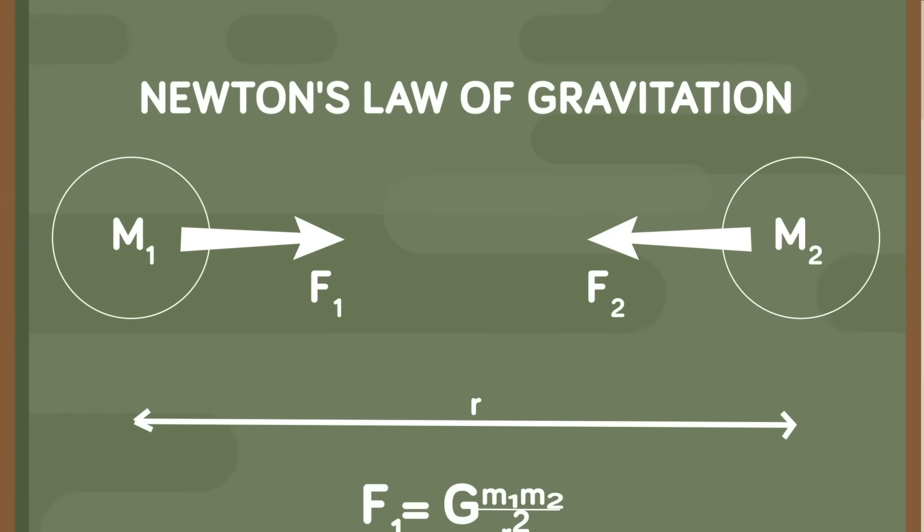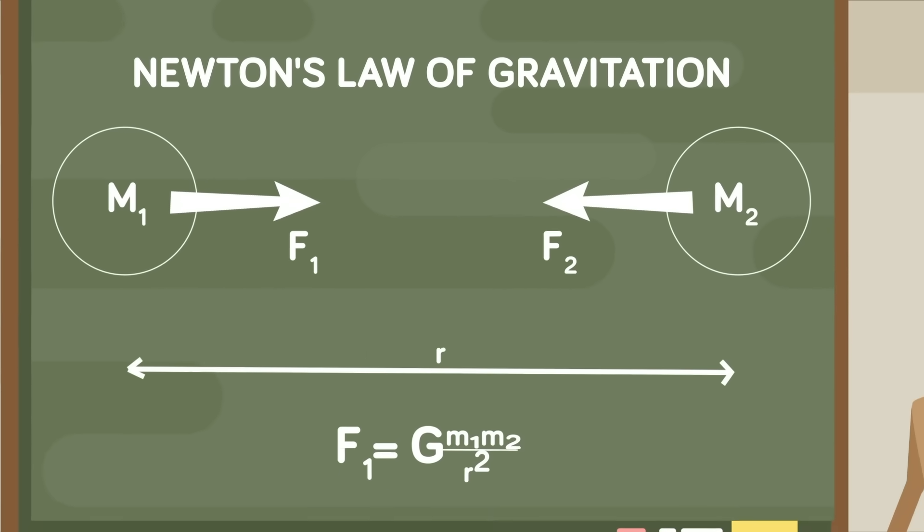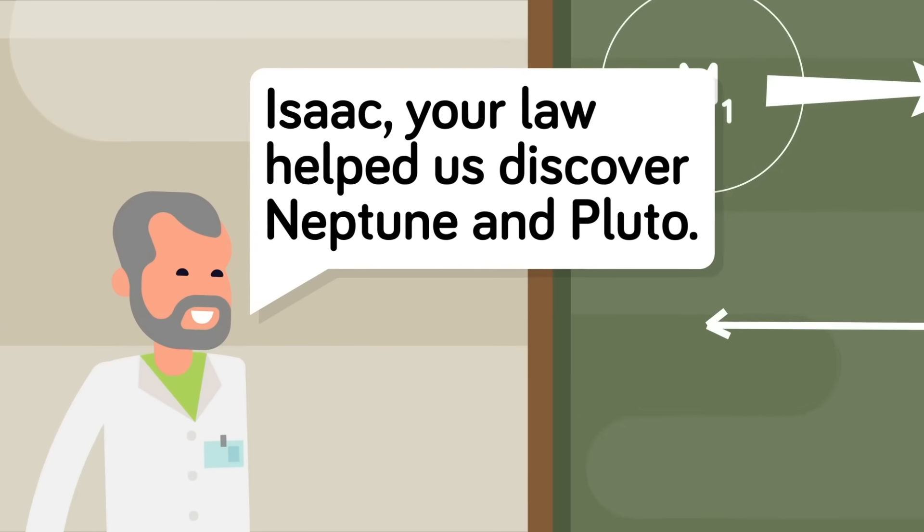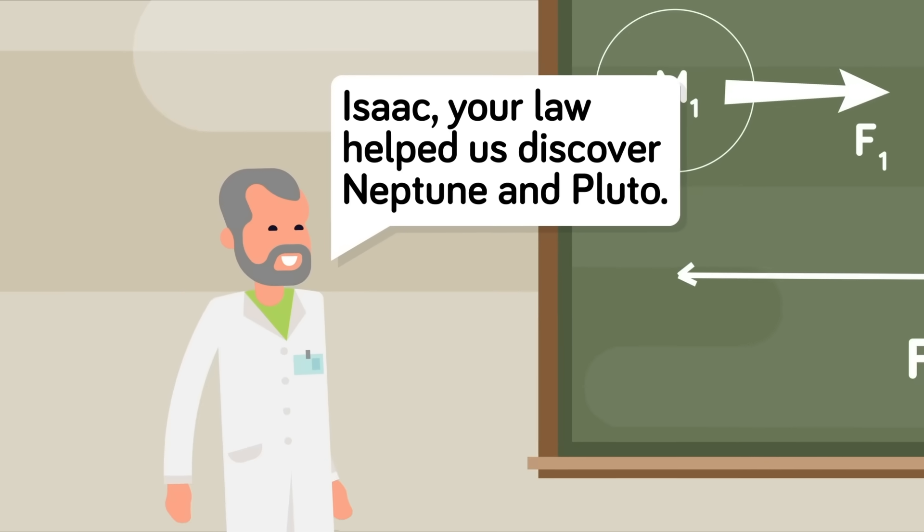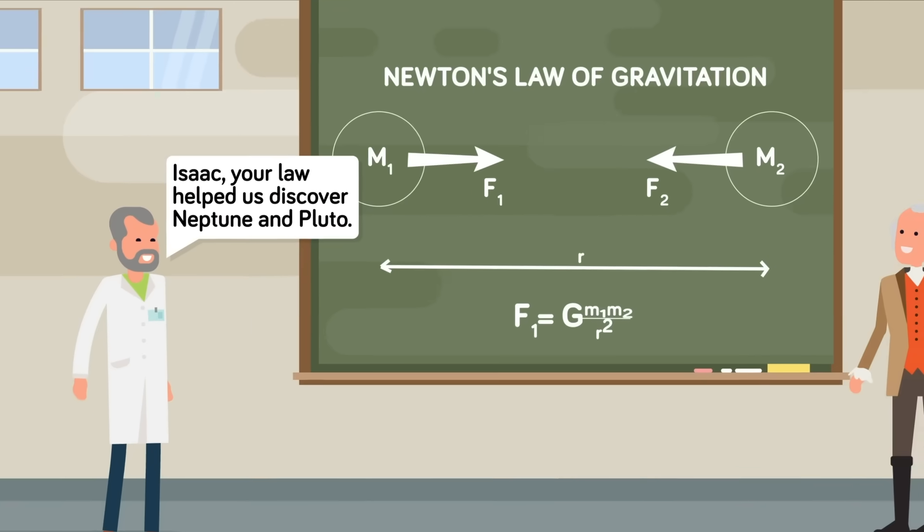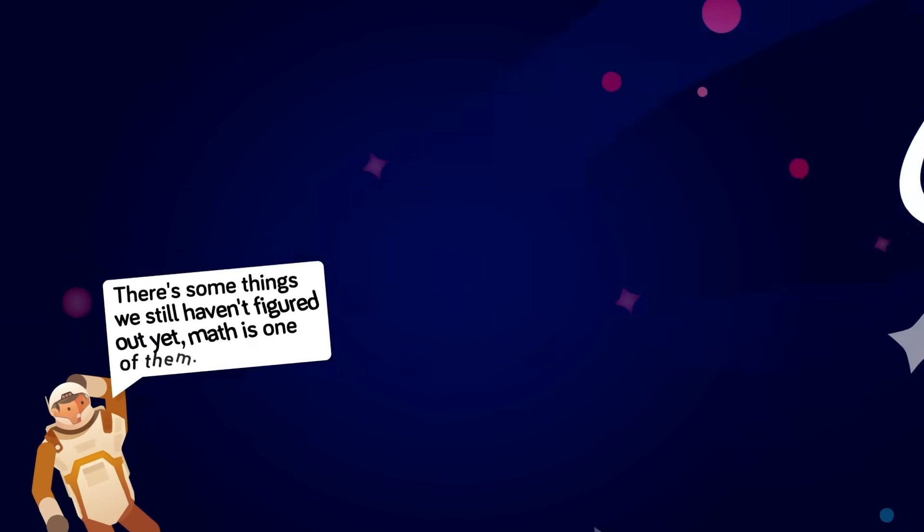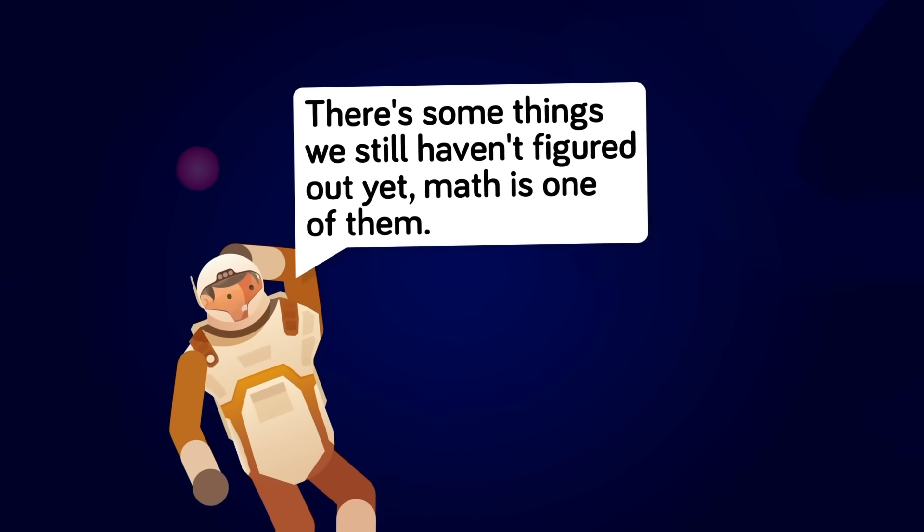Newtonian physics allows us to extremely accurately predict the orbital path of an object through a gravity field. It has never failed us yet, even in the most extreme circumstances like the discovery of Neptune and Pluto. And yet, some of these objects have been observed to shift their orbit in a way that doesn't align with the math when the known planets are taken into consideration.